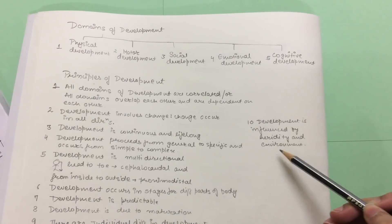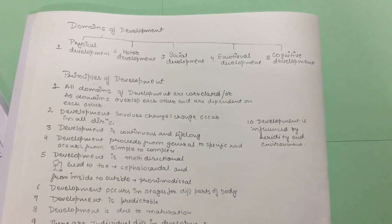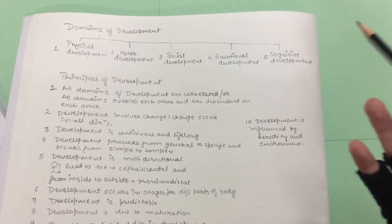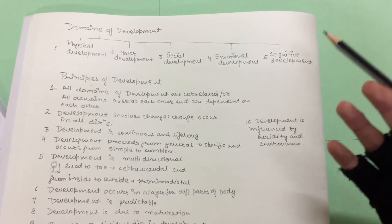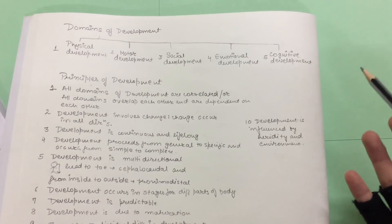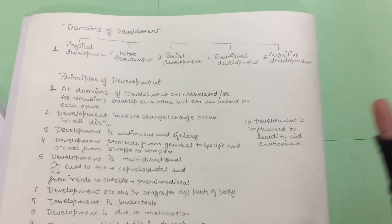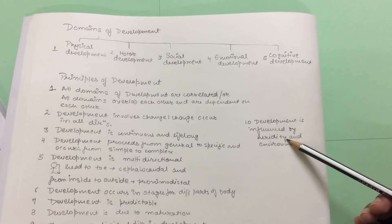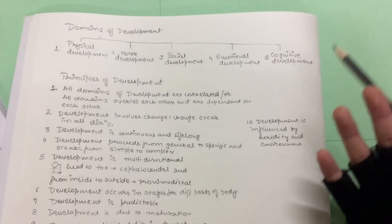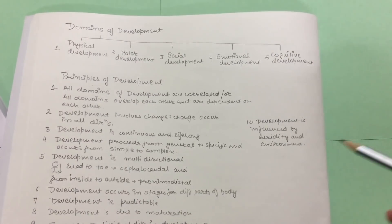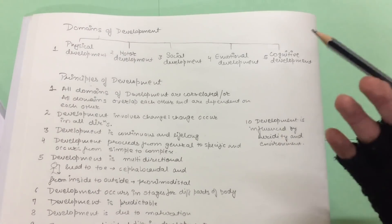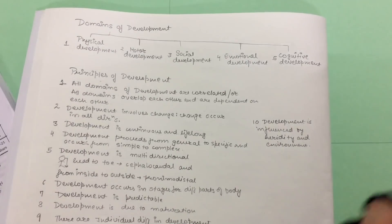Development is influenced by heredity and environment. For environment: if a child is living in a good family with nutritious conditions, the child will not be malnourished. If given study opportunities, the child will not lag behind, and will be strong physically and mentally. For heredity: the child will inherit traits from grandparents or parents — like hair color, eye color, height, and so on.